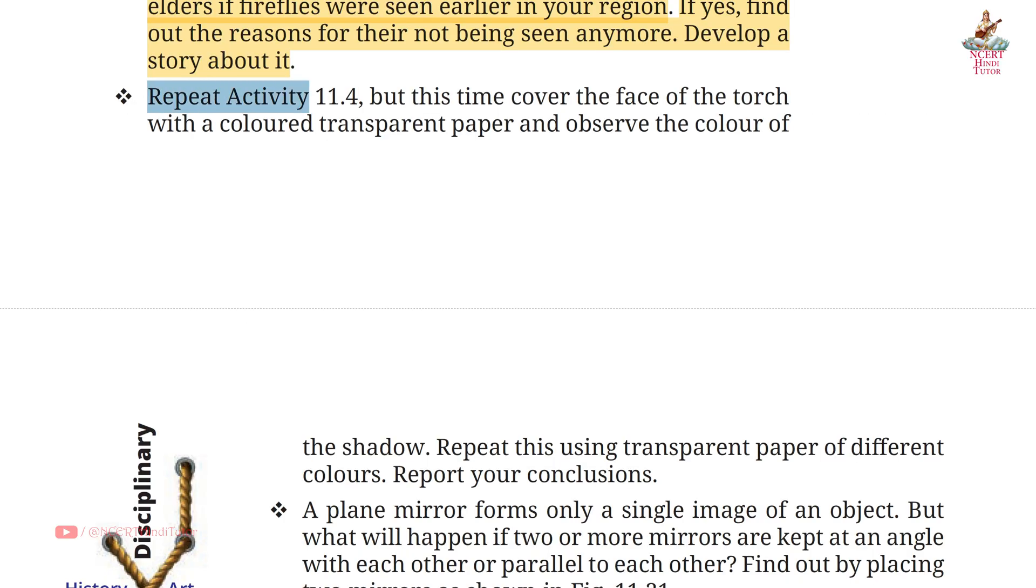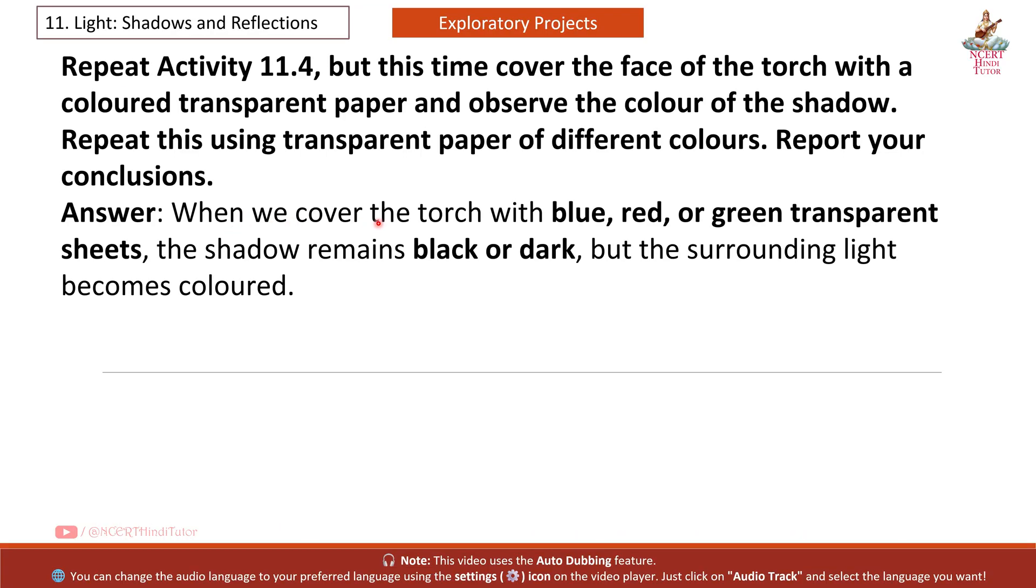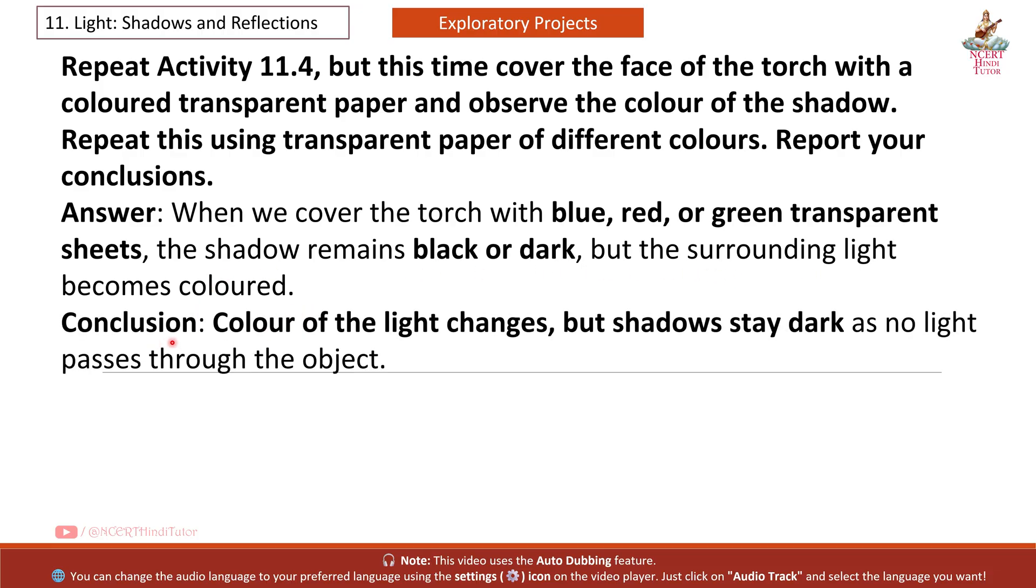Question 2: Repeat activity 11.4, but this time cover the face of the torch with a colored transparent paper and observe the color of the shadow. Repeat this using transparent paper of different colors. Report your conclusions. Answer: When we covered the torch with blue, red or green transparent sheets, the shadow remains black or dark, but the surrounding light becomes colored. Conclusion: Color of the light changes, but shadows stay dark as no light passes through the object.